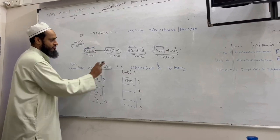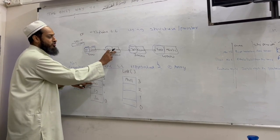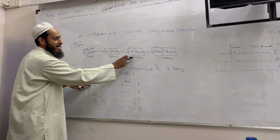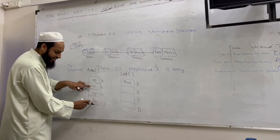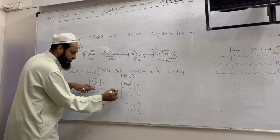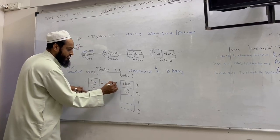Then next, 20 is pointing to where? 3000. Who is there? 30. 30 at which index? 0. So the equivalent will be 0.